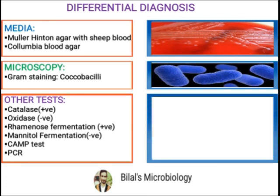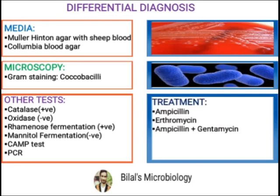If we talk about treatment, we can use ampicillin, we can use erythromycin, and we can use a combination of ampicillin and gentamicin to treat Listeria monocytogenes.